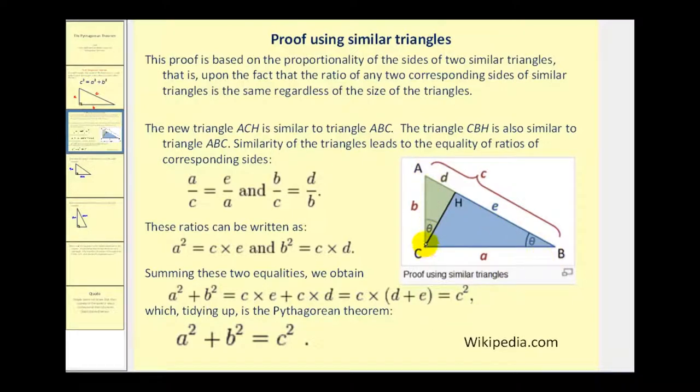and you construct an altitude from vertex c to side AB, you form two smaller right triangles that are similar to the larger right triangle. Remember in similar triangles, the corresponding sides will be proportional.